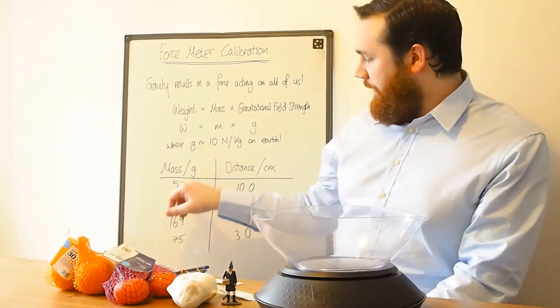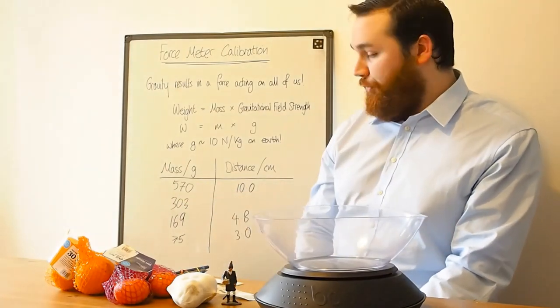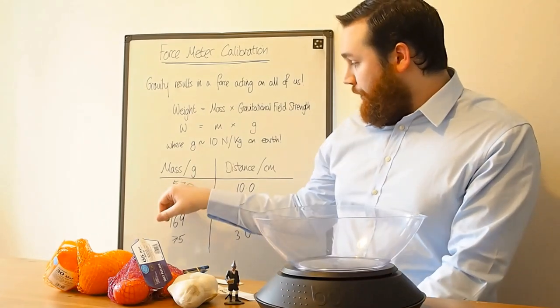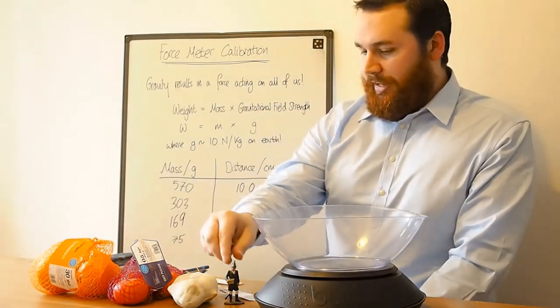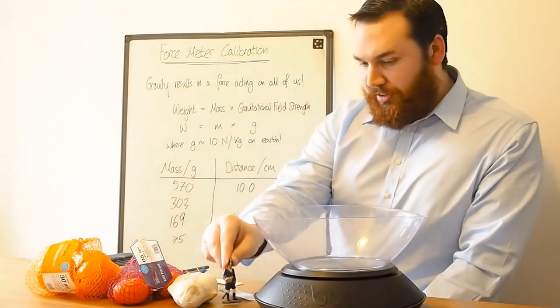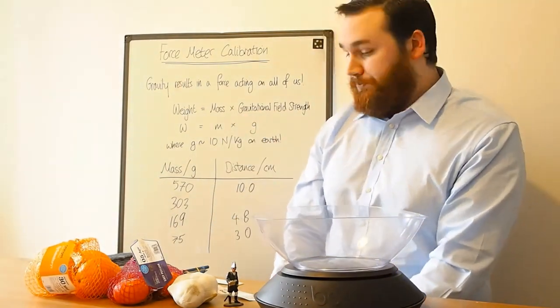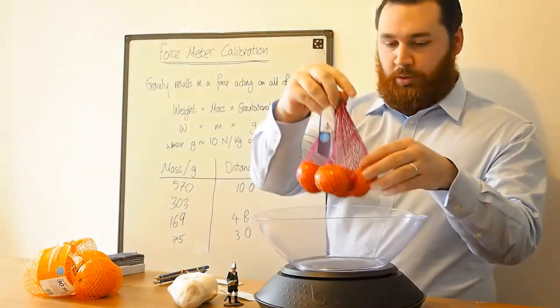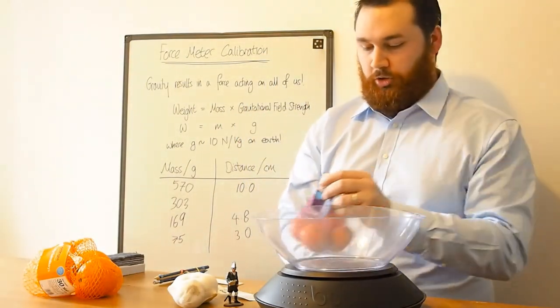So what I've done down here is I've actually pre-done a few of them. I've got some objects here which I've weighed. And it's 570 grams. That's these oranges. All the way down to 75 grams for this little toy soldier. And the one I haven't filled in is this chap. So I put the tangerines on my kitchen scales.